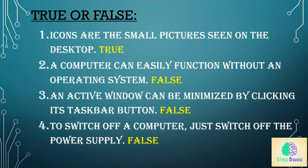Number 2 — A computer can easily function without an operating system. This statement is false, because we know that a computer cannot function without an operating system. Number 3 — An active window can be minimized by clicking its taskbar button. This statement is false. Number 4 — To switch off a computer, just switch off the power supply. This statement is false because we need to shut down a computer properly.